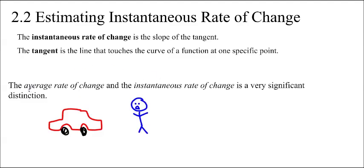So in 2.1 we talked about the average rate of change, but we need to talk about the instantaneous rate of change, which is a very significant difference.